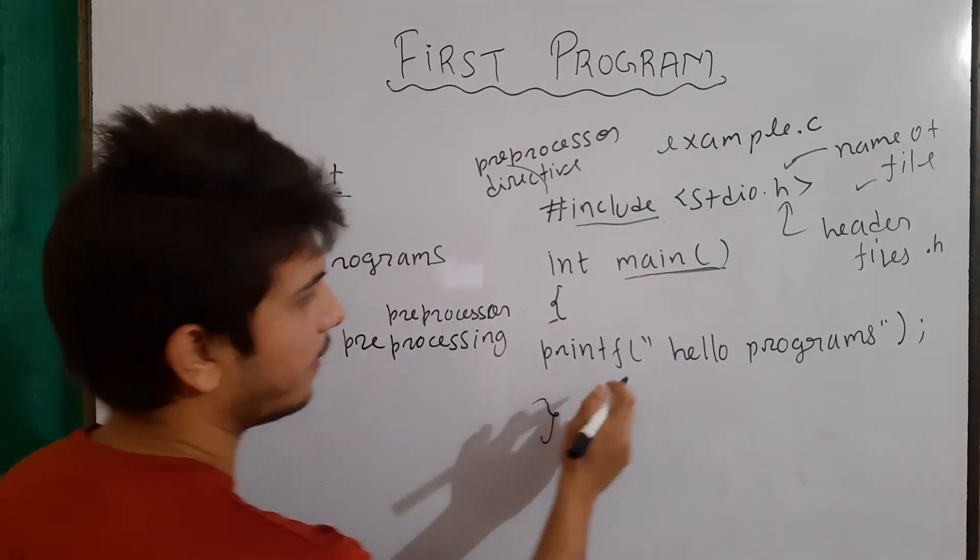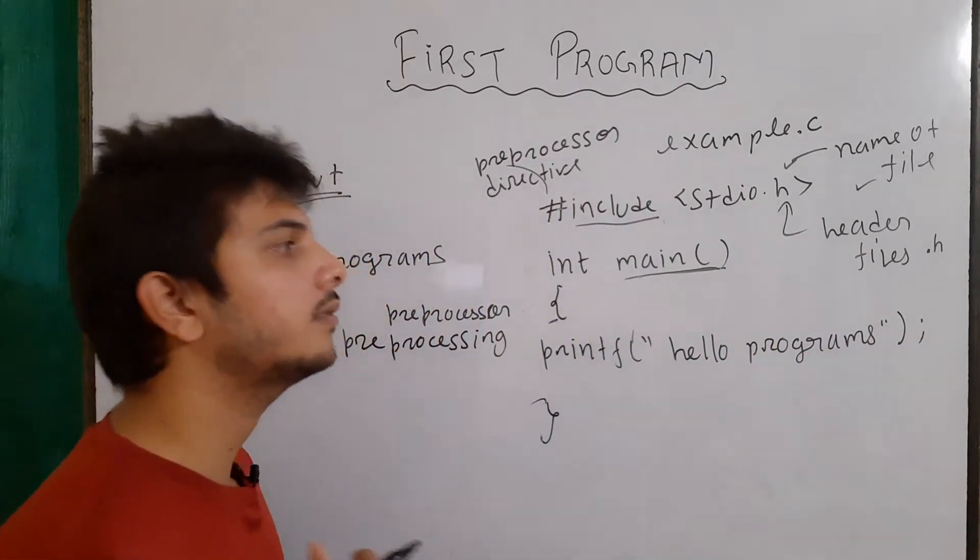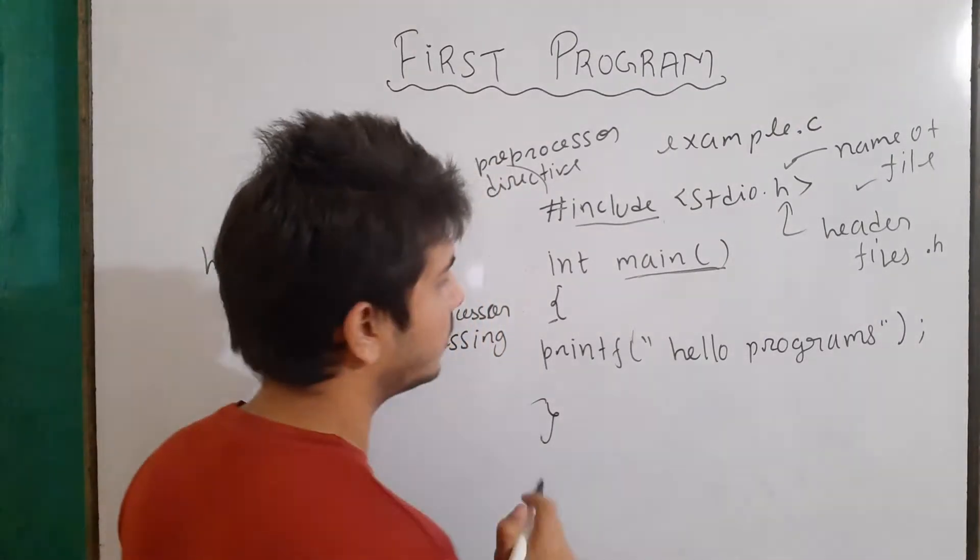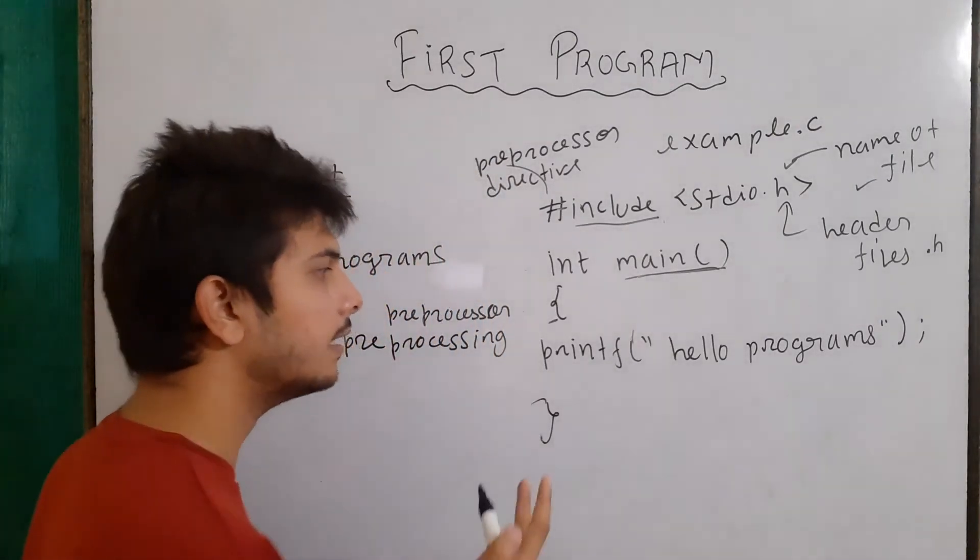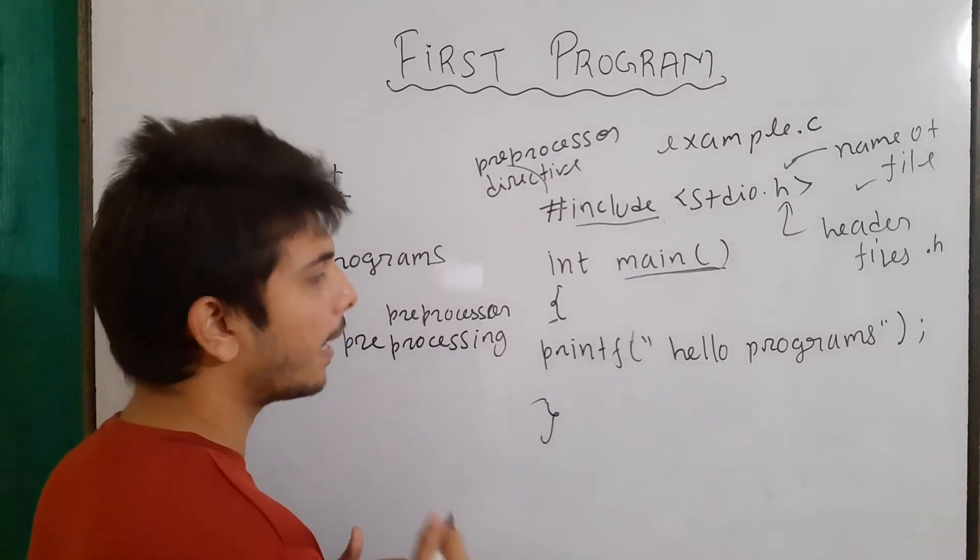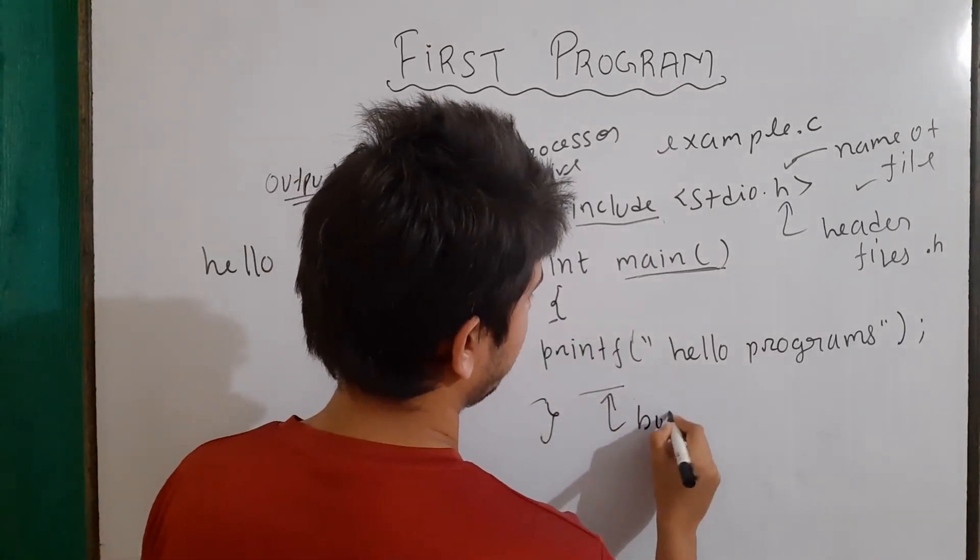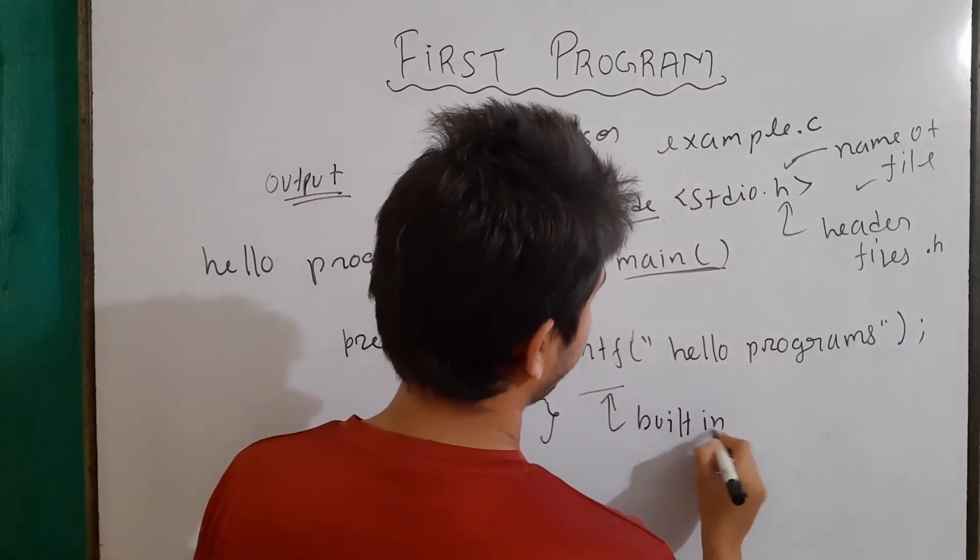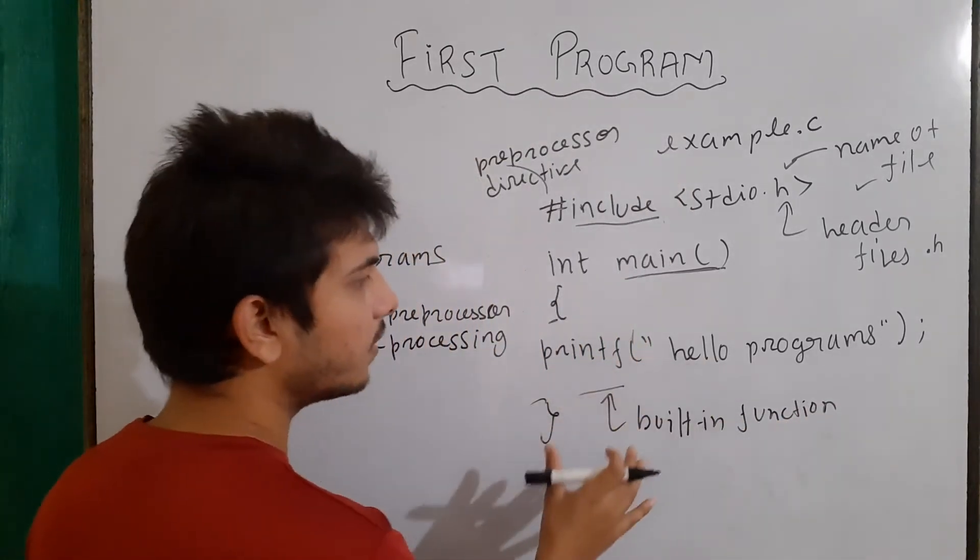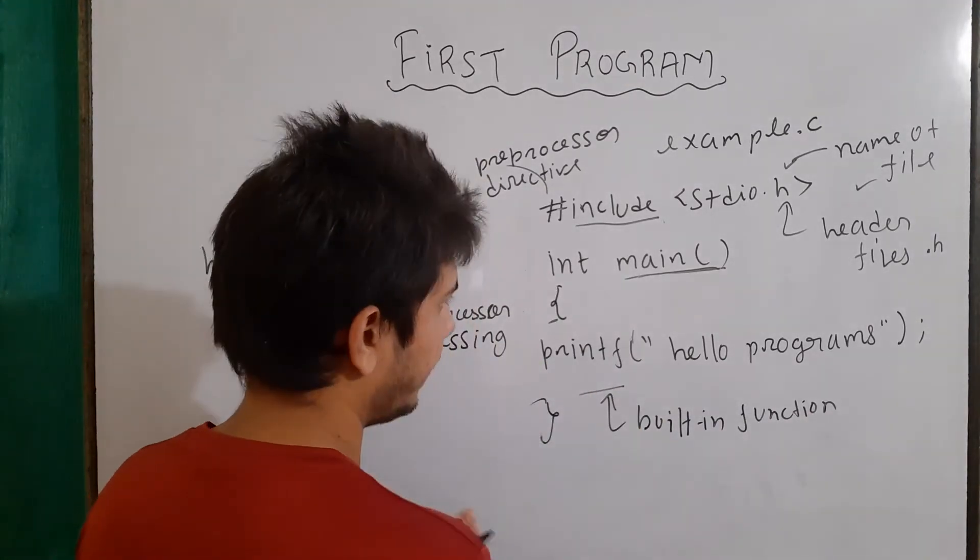Now, here is the printf. Basically, printf is also a function and every function provides us some sort of functionality. There are basically two types of function, one is built-in and other is custom. Custom functions are made by us and built-in functions are provided by our compiler. So, basically this is our built-in function. And since this is our built-in function, it is providing us the functionality to print something on the screen.